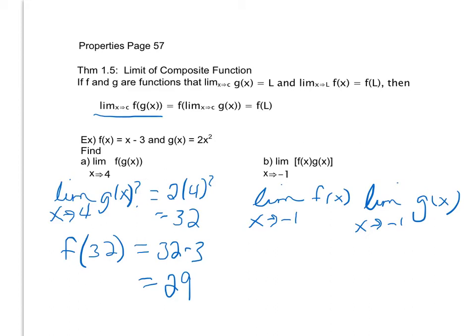When I find the limit as x approaches -1 of f(x), because f(x) is continuous, I plug -1 in and I get -1 - 3 is -4. Because g(x) is continuous I do the same thing and that gives me (-1)² is 1 times 2 is 2. So -4 times 2 is going to be -8, and I have that limit.